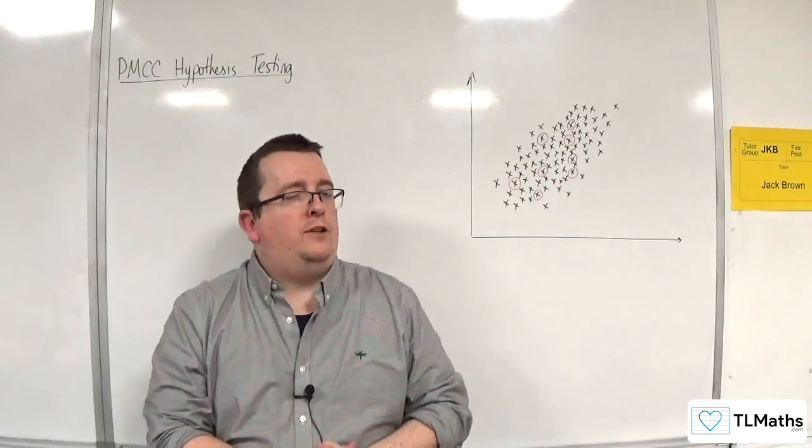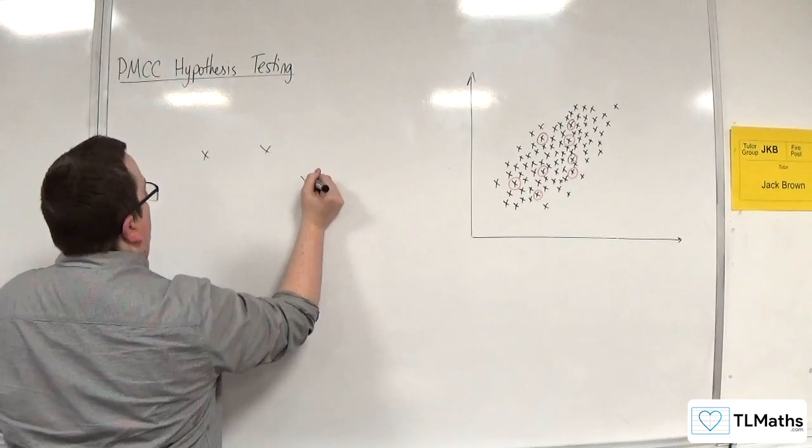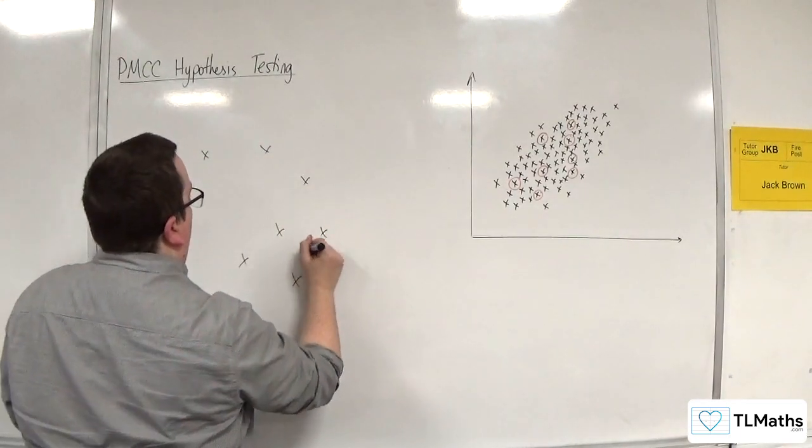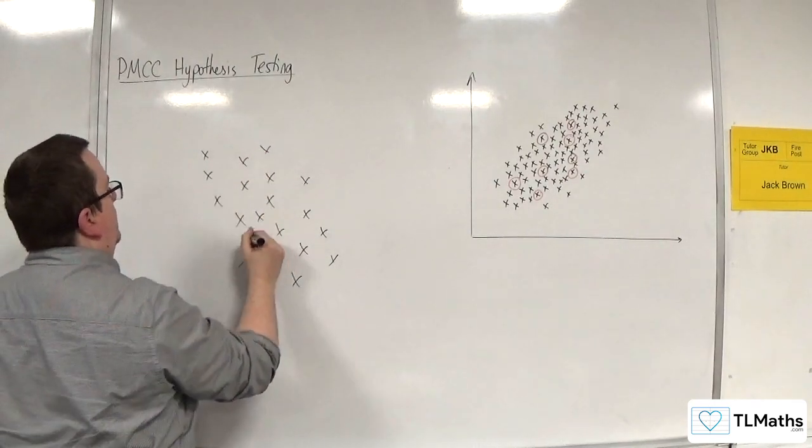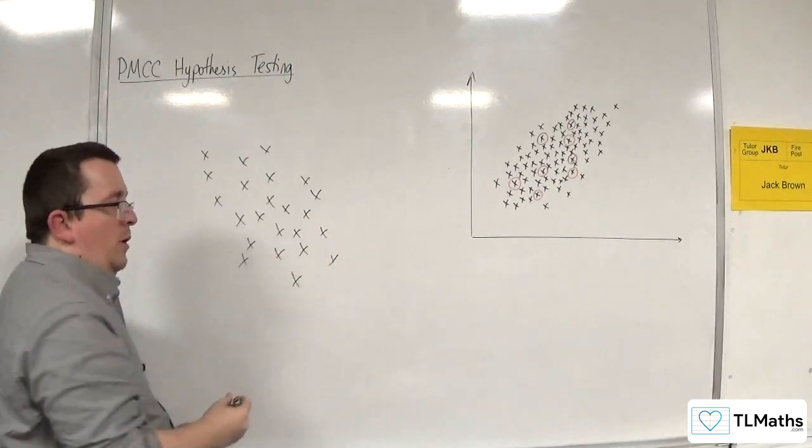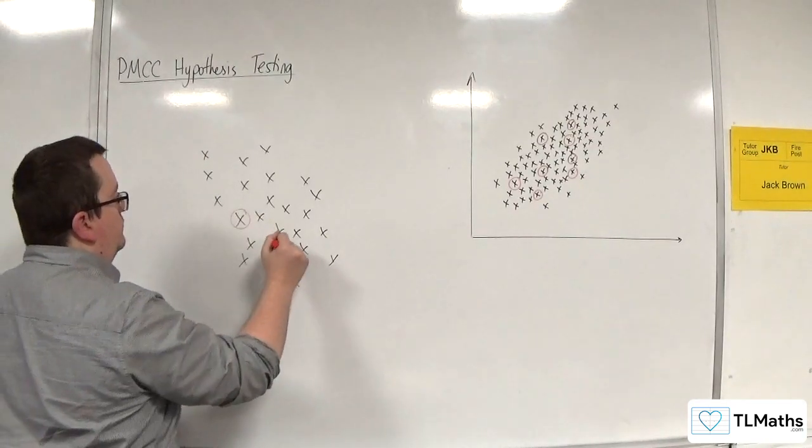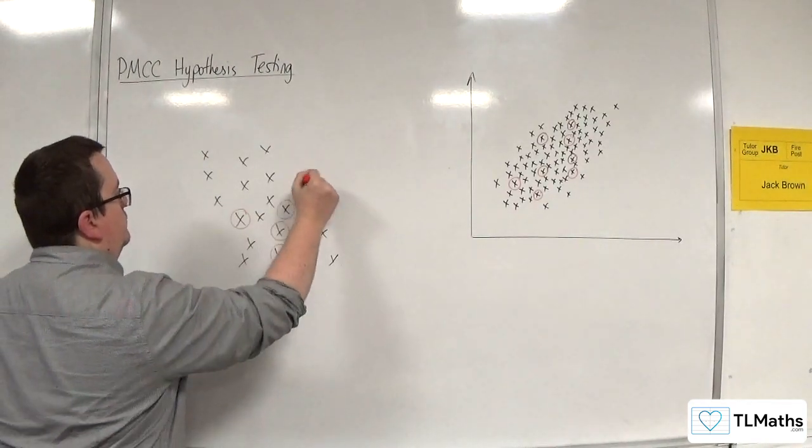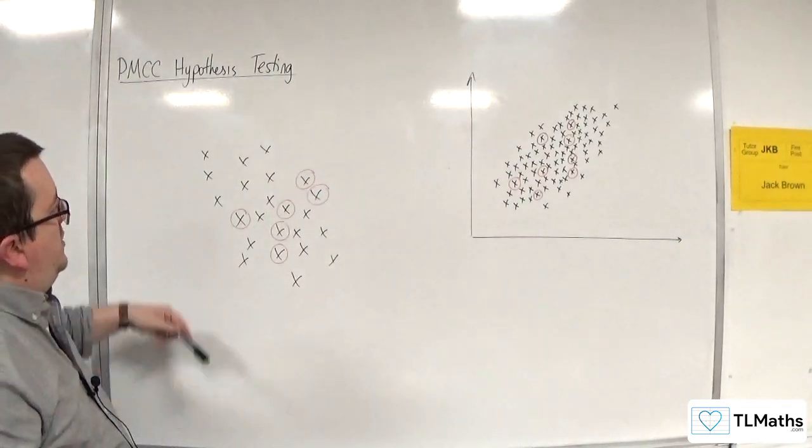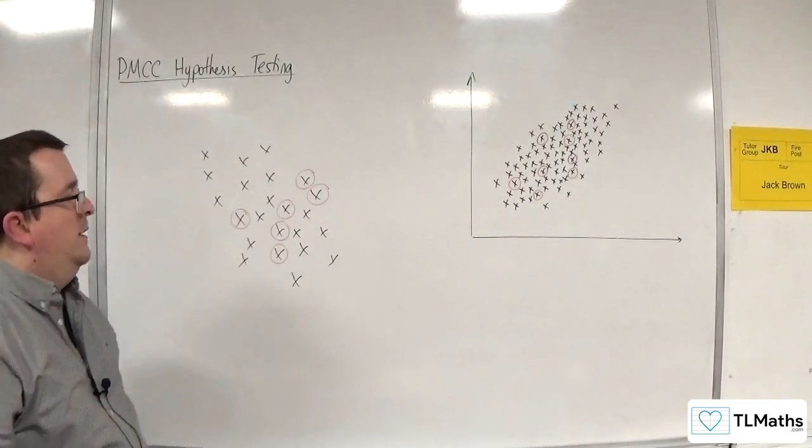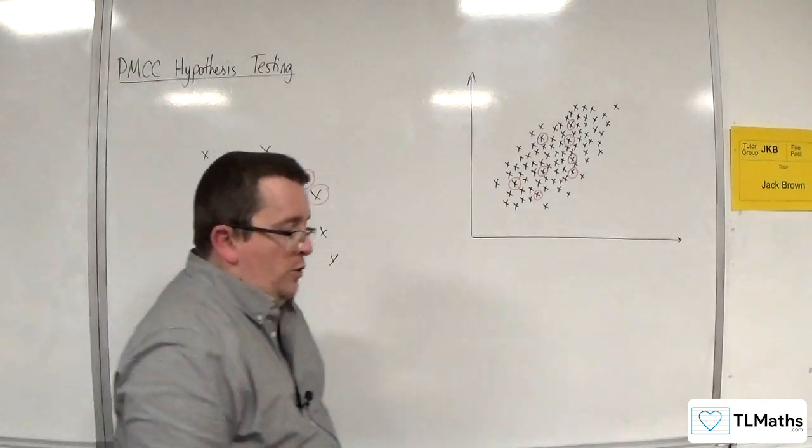No, actually, because theoretically, you could have a data set, a large data set. So let's say this is your parent population. So if you take a sample, maybe your sample collects this set of data. The parent set of data looks like it's negatively correlated and your sample is positively correlated. So that could potentially happen.